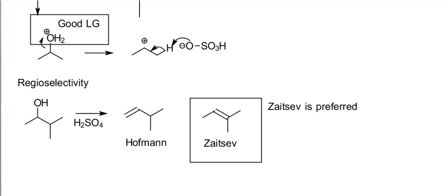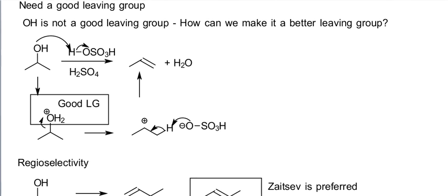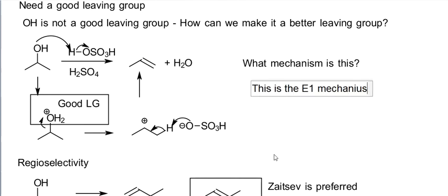Why are we going to prefer the Zaitsev product? Well, let's actually scroll back up here to this mechanism that I drew and ask ourselves, what elimination mechanism do we have here? Is this the E1 elimination mechanism or is it the E2 elimination mechanism? We form a good leaving group. The leaving group leaves. We have a carbocation and then we have proton transfer. This is the E1 mechanism.